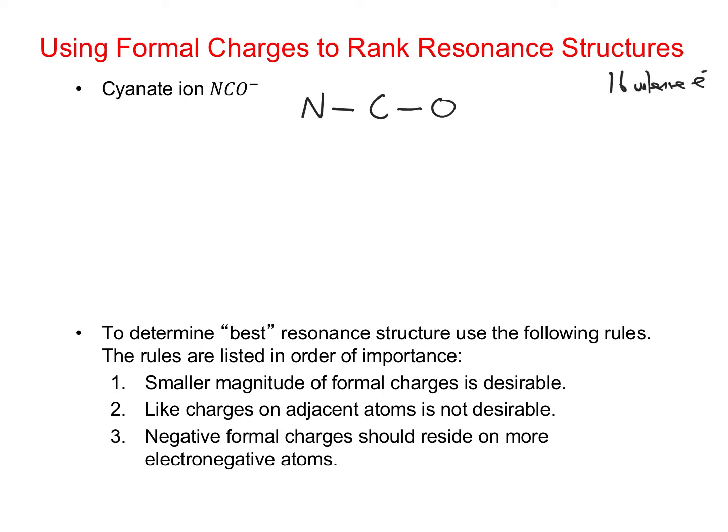I've used 4 electrons for the single bonds. I'll start giving them to the most electronegative non-central atom, so that would be oxygen. After distributing all 16 valence electrons, nitrogen and oxygen are happy with their octets, but carbon is without an octet. So we have 3 different resonance structures that we can draw.